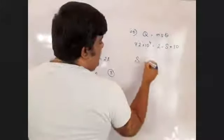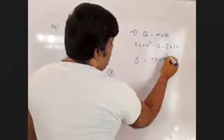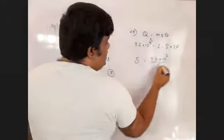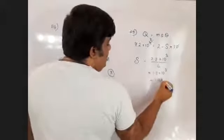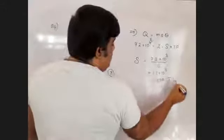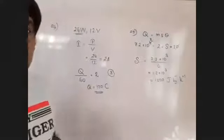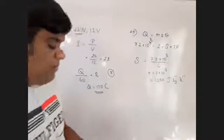So S equals Q divided by mass times delta T. That's 7.2 times 10 to the power 4 divided by 2 times 30, which equals 1200 joules per kilogram per Kelvin. The answer is option 4.